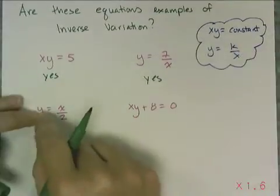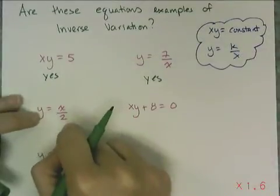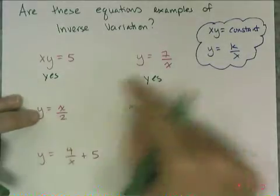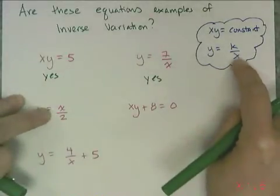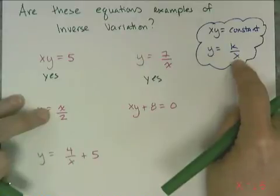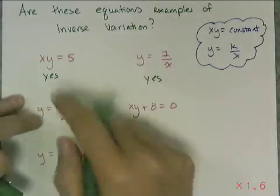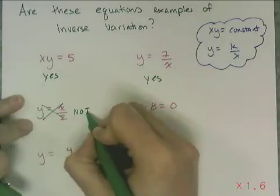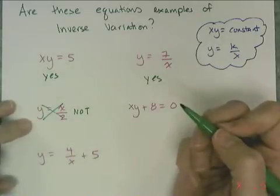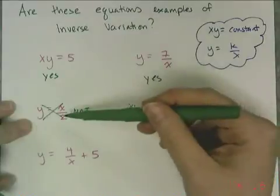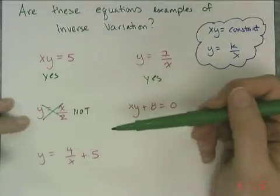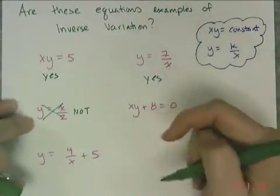Then I look at y equals x over 2. It looks like it might qualify because it's a fraction, but in an inversely proportional relationship, x is in the denominator — here it's in the numerator. So this is not an inverse variation. It's actually a direct variation because I can write it as y equals one-half x, fitting the form y equals some constant times x.